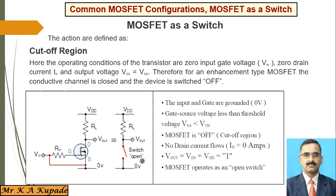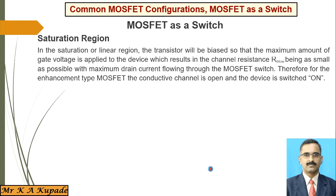Next is the saturation region. In this operating condition, the transistor is biased so that the maximum amount of gate voltage is applied to the device, which reduces the channel resistance RDS to almost a very small value. This RDS is also called the on-resistance. Due to this, maximum drain current flows through the MOSFET switch. Therefore, for the enhancement-type MOSFET, the conductive channel is open and the device is in the switched-on position.